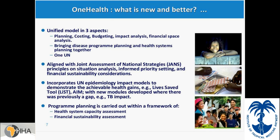One Health incorporates the LIST tool and the LiST tool for child and maternal mortality, which is fully incorporated into the software. The same applies to AIM, which is for HIV planning. For TB, there was no previously existing model, so a new one was developed. The final key feature is that all planning is carried out within the framework of health systems and financial sustainability.